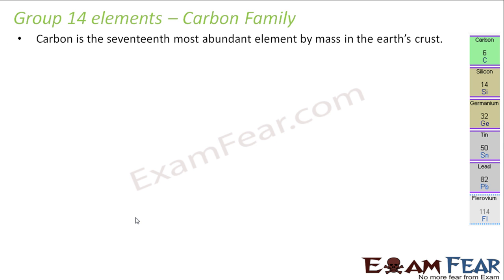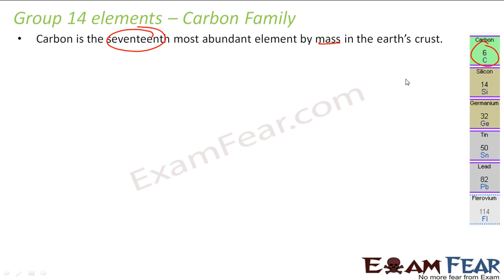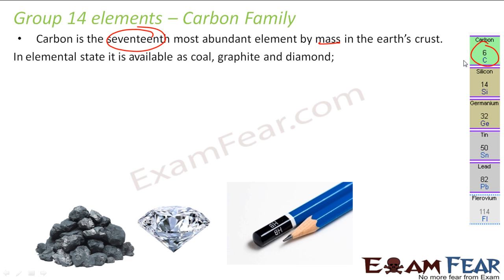Carbon is the 17th most abundant element by mass of the earth's crust. We have this carbon family where we talk about carbon, silicon, germanium, tin, and lead. Carbon is a very critical element, and there is a special chapter in chemistry — organic chemistry — for the special characteristics and usage of carbon.